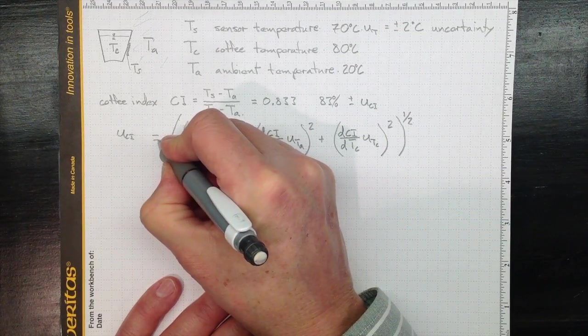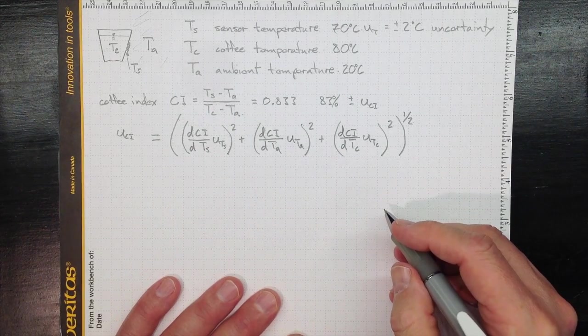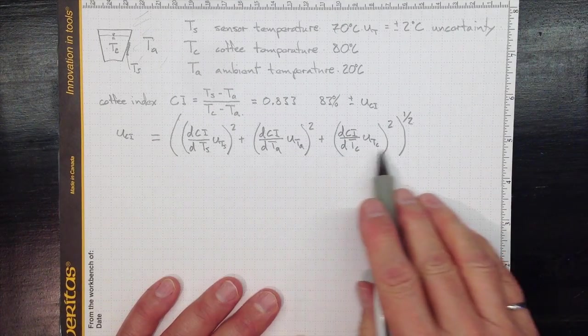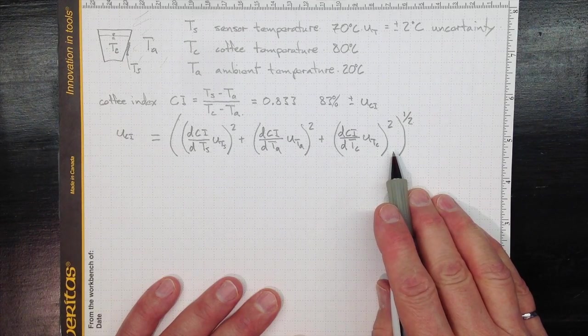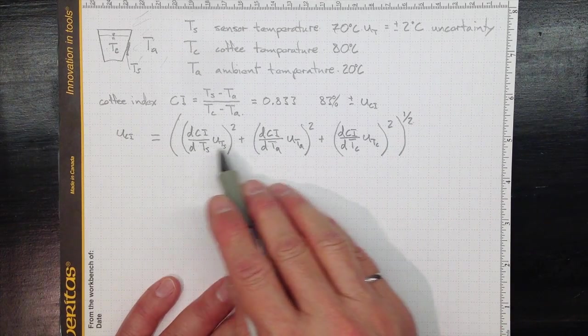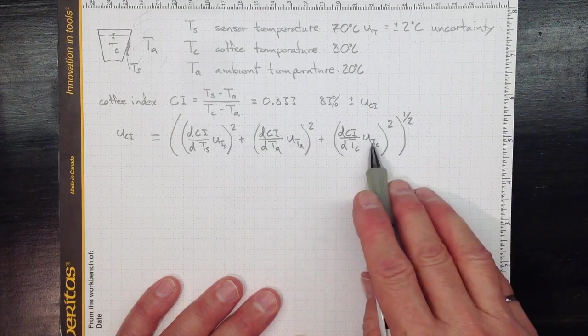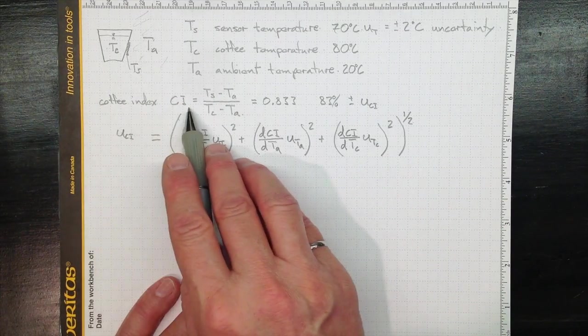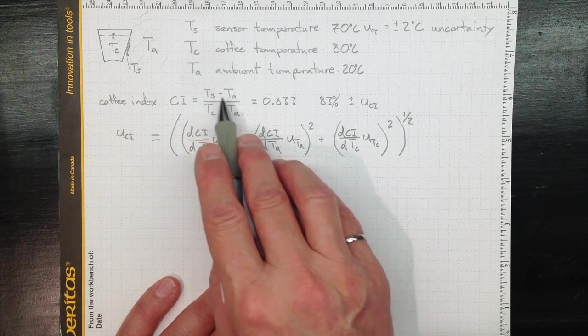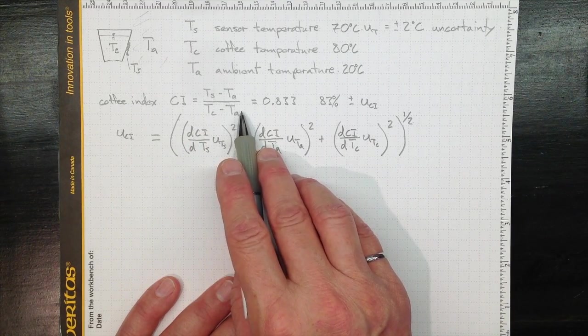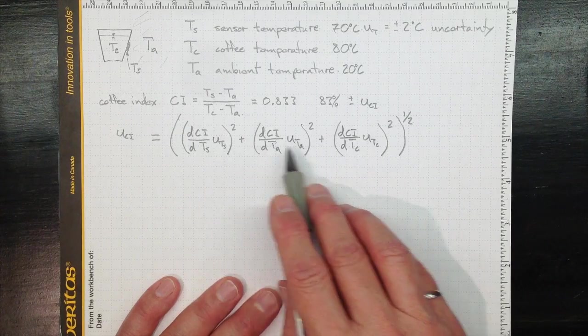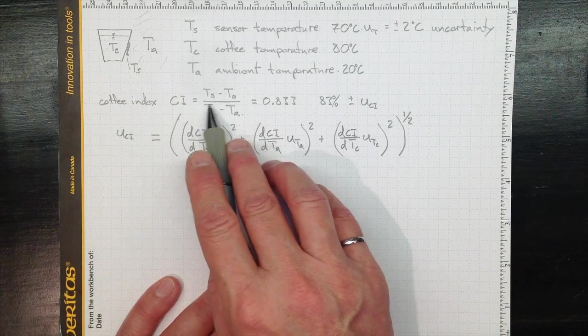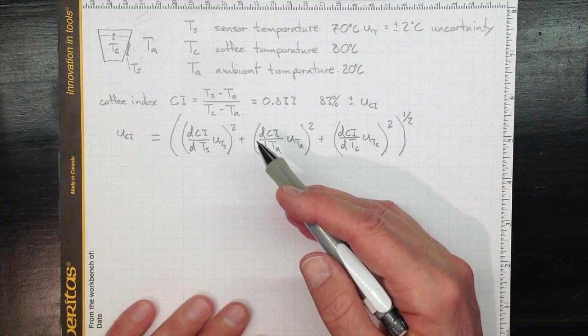And that's the formula that we developed for Gaussian normal distributed random variables in the textbook. So this gives us a way to estimate the combined effect of these three uncertainties on the uncertainty of the coffee index measurement that we've made based on three different temperatures. Now, taking these derivatives from that formulation should be pretty simple.